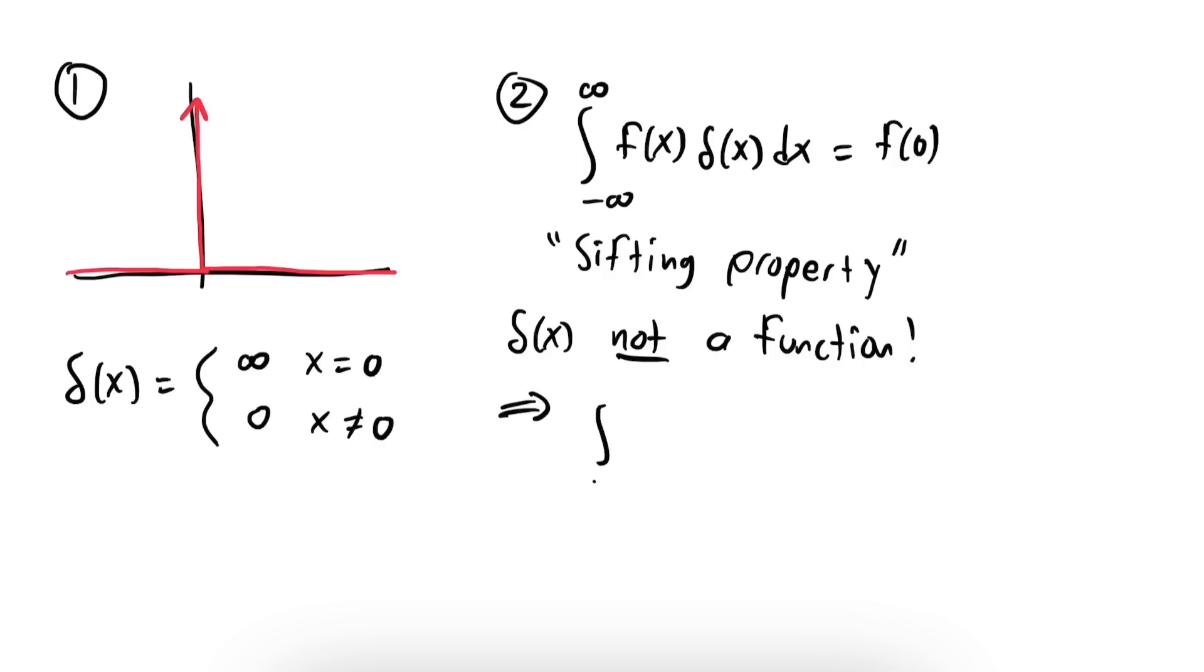For example, if we integrate the Dirac delta against the function f(x) = 1, the sifting property tells us that the integral of the Dirac delta is 1. But the Dirac delta is 0 everywhere except at 0. How can the area under a point be positive? Does this mean we need to define some strange convention like 0 times infinity equals 1? To avoid dealing with such arbitrary ideas, let's just say for now that the integral of the Dirac delta behaves much differently than it does for ordinary functions.